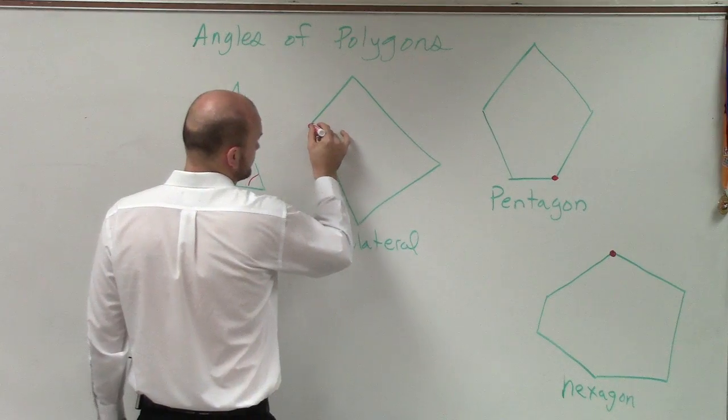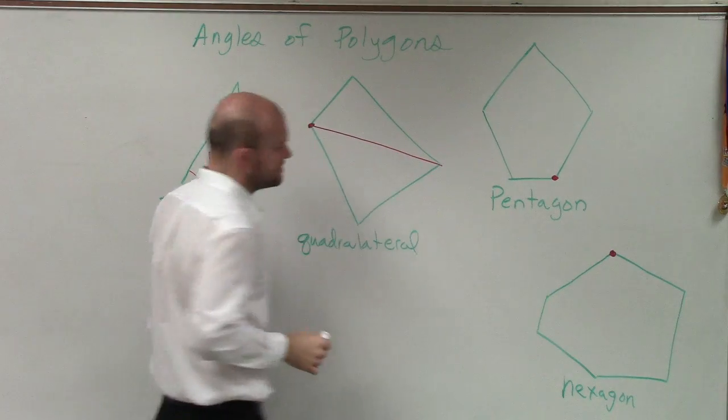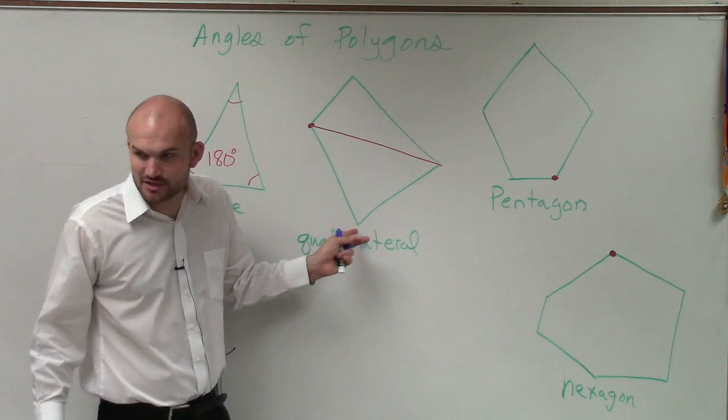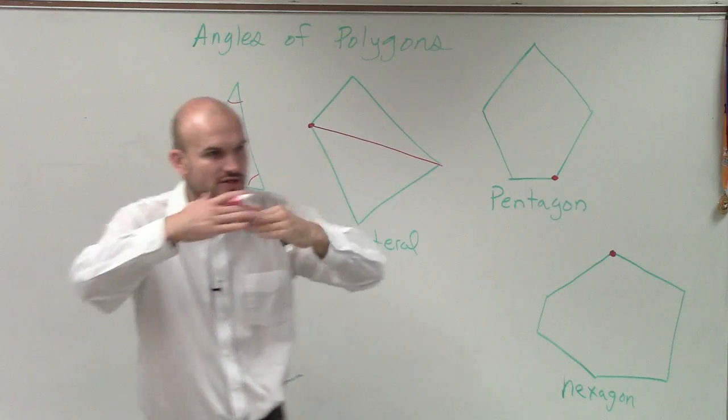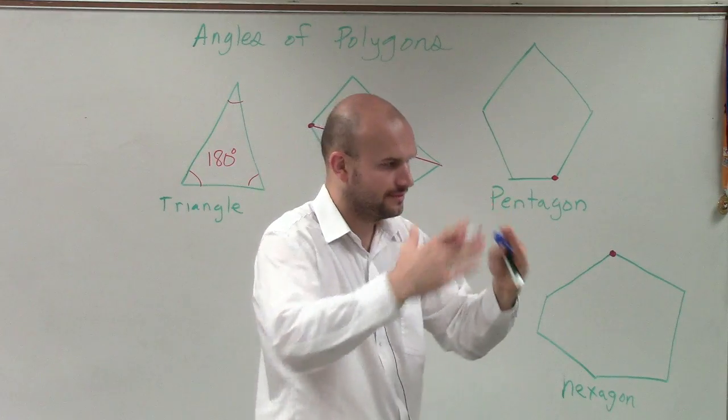So here, I'll draw to a vertex here. I can't draw a line here because there's already a line there, right? I can't draw a line to that vertex because there's already a line there. Vertices are where our two sides come together.